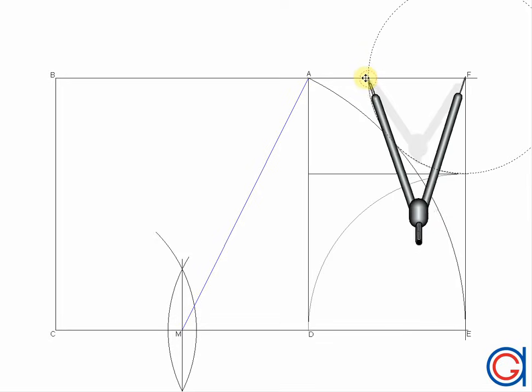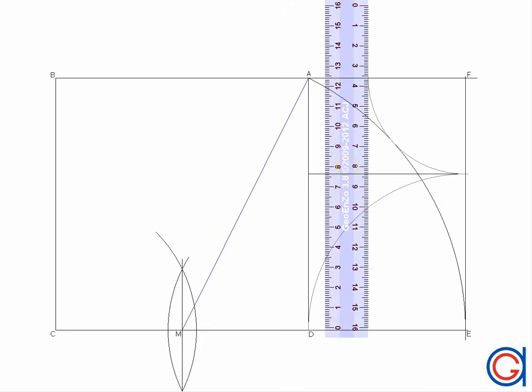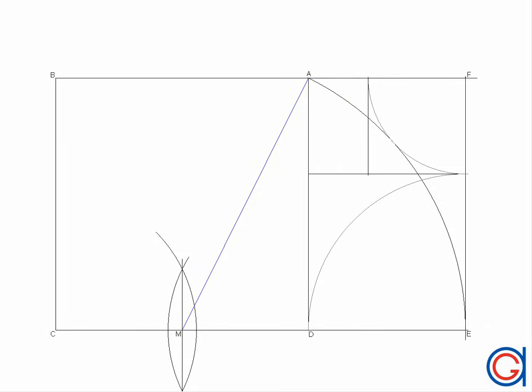Now I am going to repeat this process by setting my compass on point F to transport the length of the side as can be seen here. And now we have our third square and our fourth golden rectangle.